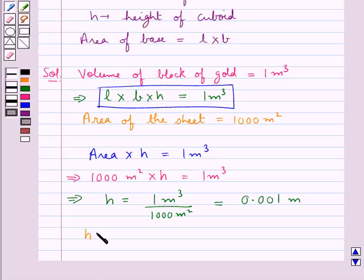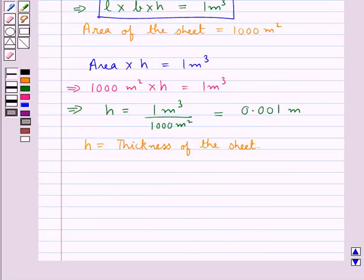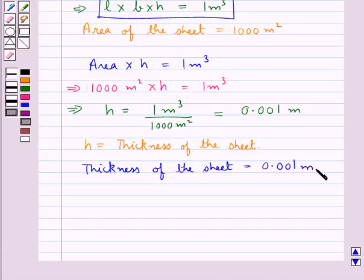Here this H is the thickness of the sheet. So, we get thickness of the sheet is equal to 0.001 meters.